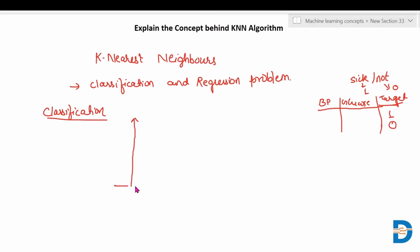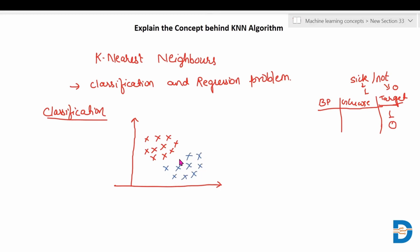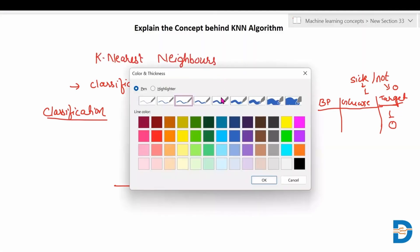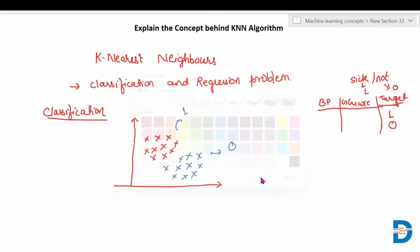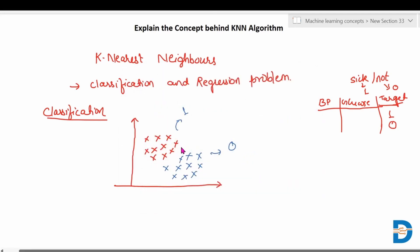Let's plot this on a 2D graph. This is one class or one category, and let's assume we have another category. So category one and category zero are plotted. Now a new data point comes in, and we have to find out which category that data point belongs to. The green point is our new data point, and we have to find out if that person is sick or not sick.